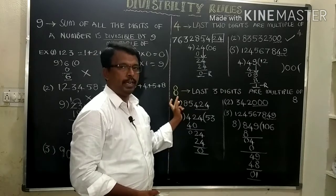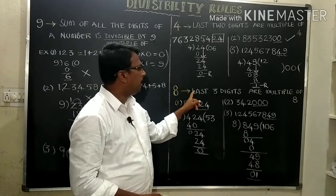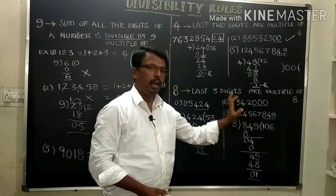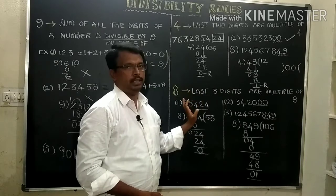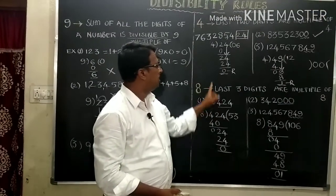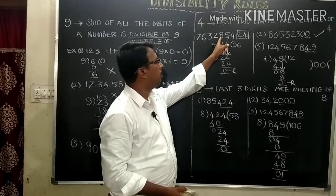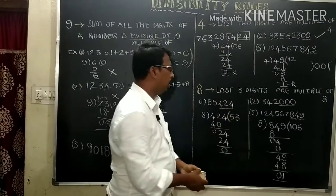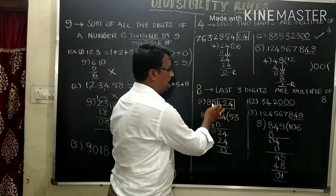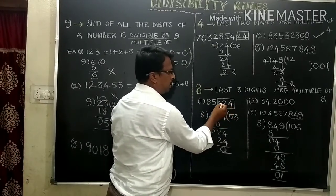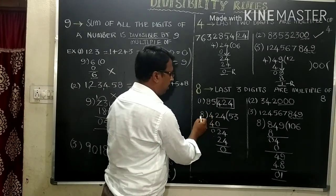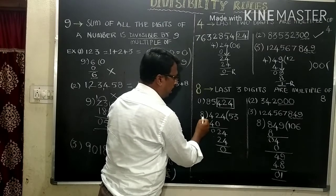The divisibility rule of 8: the last three digits are a multiple of 8, then the number can be divisible by 8. Here, same number — I took 85424. In this number the last three digits are 424, meaning 1's place, 10's place, 100's place: 424.